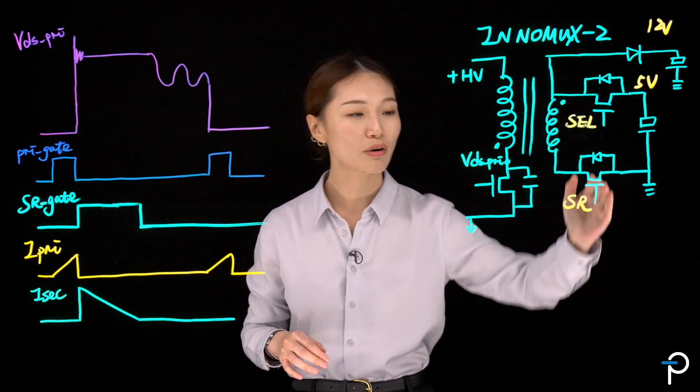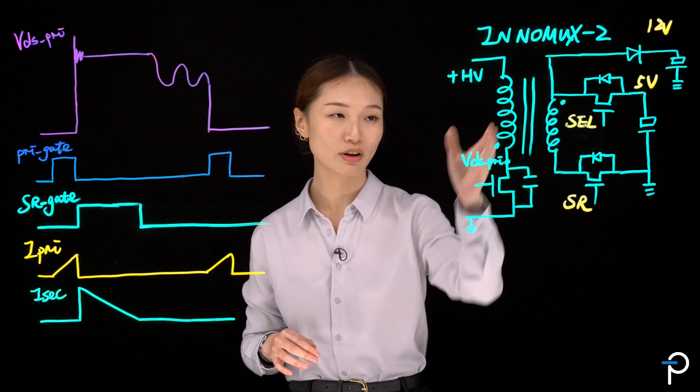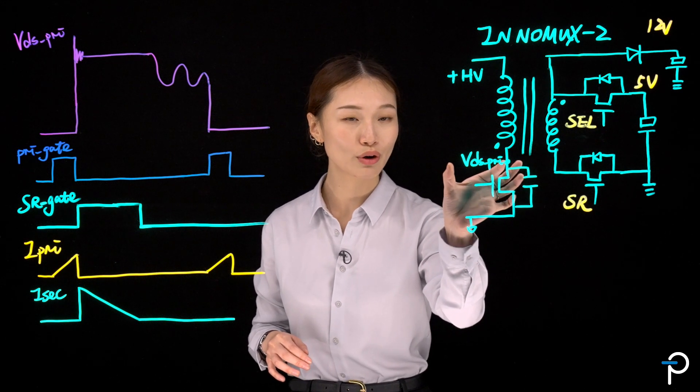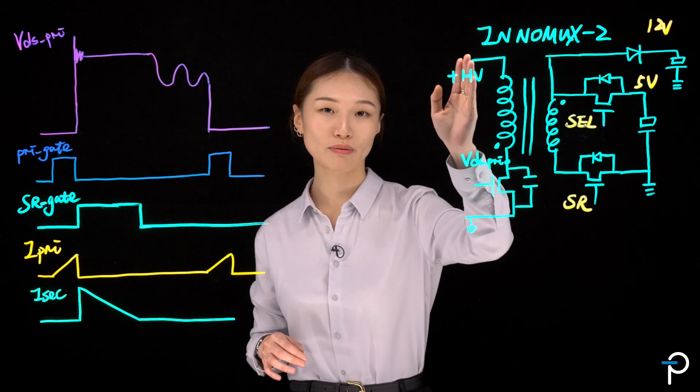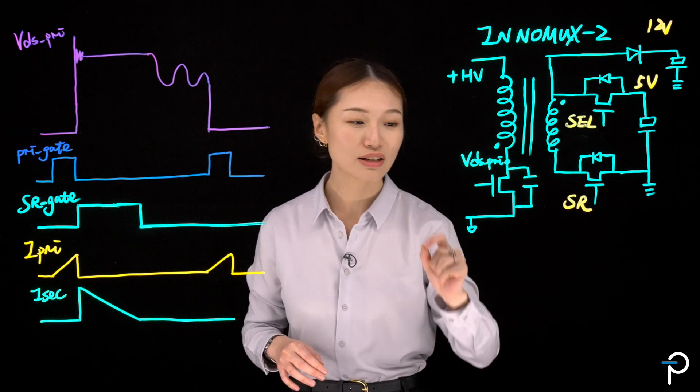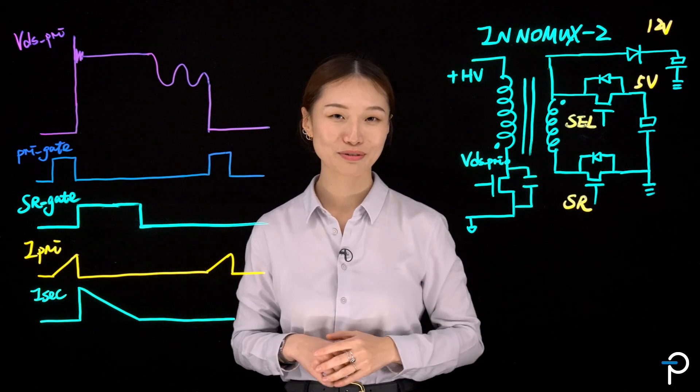That reverse current is then commutated back to the primary side, also creating a reverse current on the primary side. It will flow from the VDS primary node back to the high voltage rail, discharging the voltage across your switch. And at nearly zero volt, if we turn on the switch, that will give us zero voltage switching.